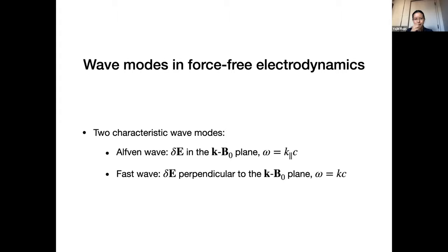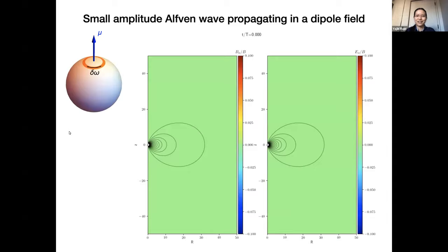In force-free electrodynamics, there are two wave modes: the Alfvén wave, which propagates along magnetic field lines with group speed c, and the fast magnetosonic wave — basically an electromagnetic wave with speed c, which is the fast magnetosonic wave in the infinite magnetization limit.